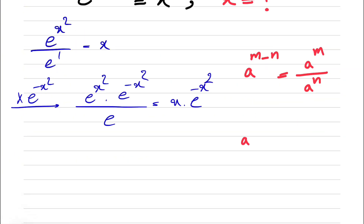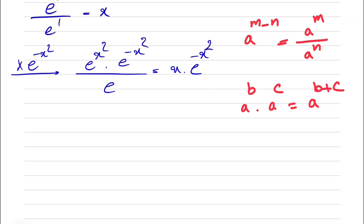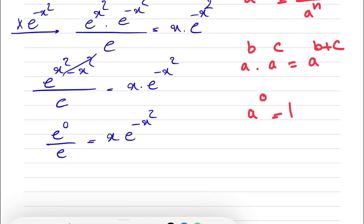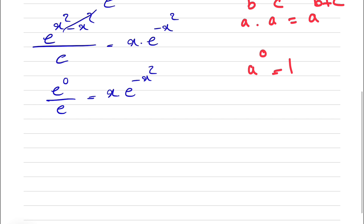So under the laws of the exponent, when we have a to the power of v times a to the power of c, this will be equal to a to the power of v plus c. So in the numerator, we have e to the power of x squared minus x squared over e is equal to x times e to the power of minus x squared. This will be equal to 0. So we have e to the power of 0 over e is equal to x times e to the power of minus x squared. We know any number to the power of 0 is 1, so we have 1 over e is equal to x times e to the power of minus x squared.